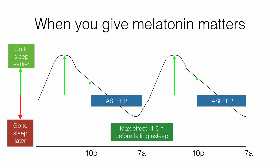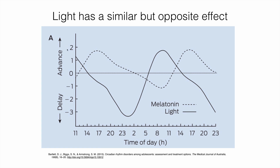Whenever using melatonin or any other medication, make sure you consult your doctor or your child's doctor first. I also want to mention that light has a similar but opposite effect. Light exposure in the early evening has a very strong effect on making your melatonin get secreted later and making you fall asleep later. That's why it's so important to avoid bright light exposure in the late evening before you're trying to fall asleep.